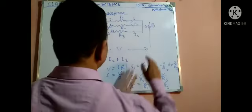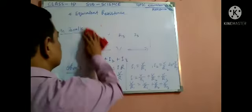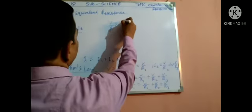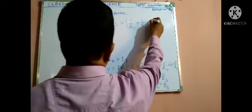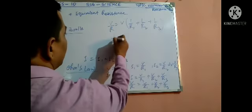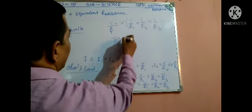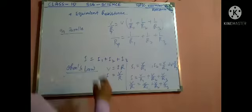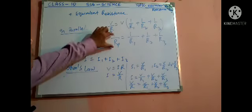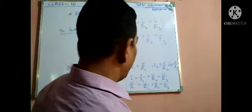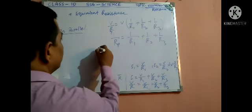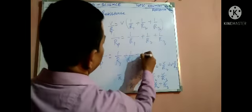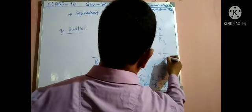Now taking this value: V/R = V(1/R1 + 1/R2 + 1/R3). So taking V common: V cancels out, so in the parallel case Rp gives 1/Rp = 1/R1 + 1/R2 + 1/R3. So in parallel connection: 1/Rp = 1/R1 + 1/R2 + 1/R3. In the general case of n terms: 1/Rp = 1/R1 + 1/R2 + 1/R3 + ... + 1/Rn.